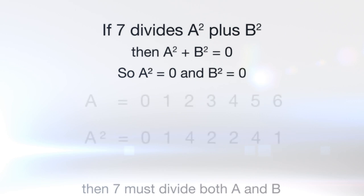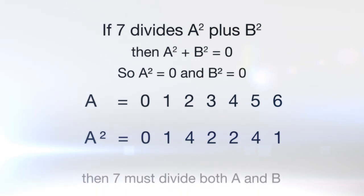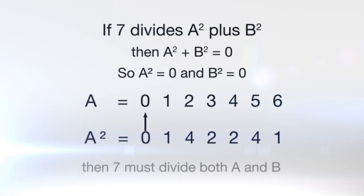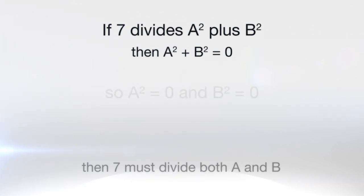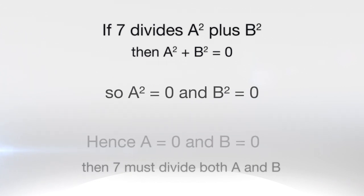So now what's the next line of the proof? Well what can we infer from knowing that A squared equals 0? Let's put up the table of A and A squared again. You can see there's only one way that A squared can equal 0 and that's if A equals 0. And we can do the same for B. So if we know that A squared equals 0 and B squared equals 0, the next line of the proof we could put in is that hence A equals 0 and B equals 0.